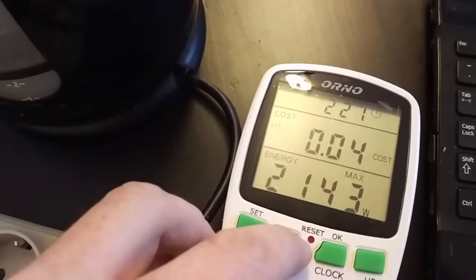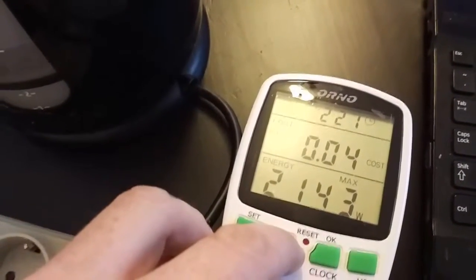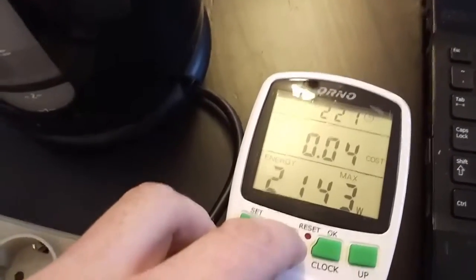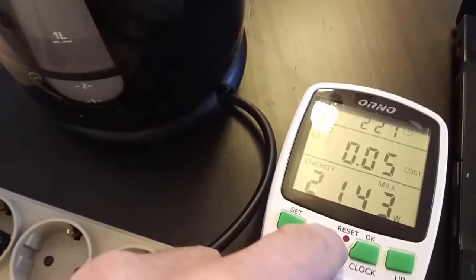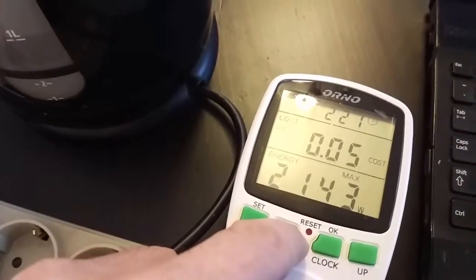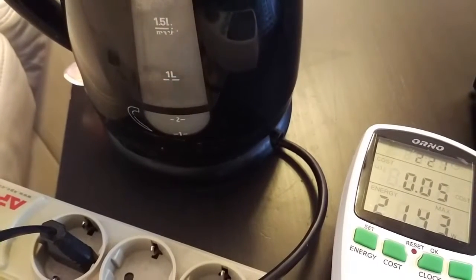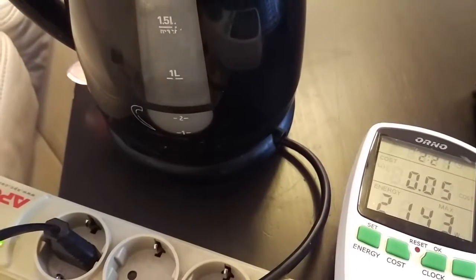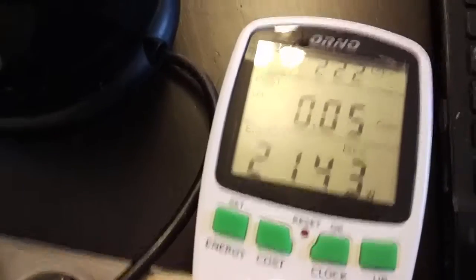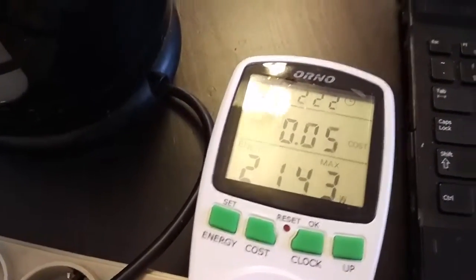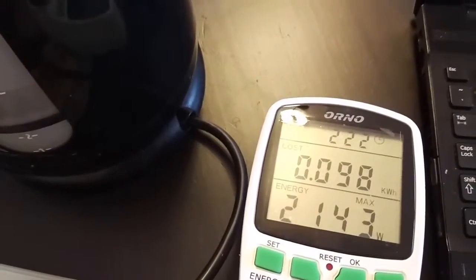Right now it's 4 groszy, 5 groszy, 6 groszy, 7 groszy, 8 groszy... Actually, 5 groszy. Okay, in Poland it's 5 groszy, and it took 0.098 kilowatt hours to boil one liter of water.